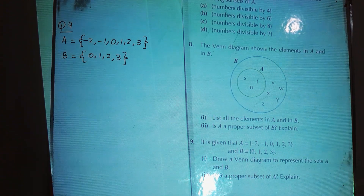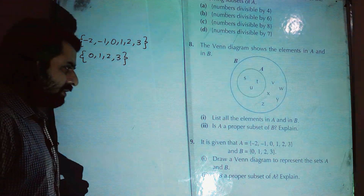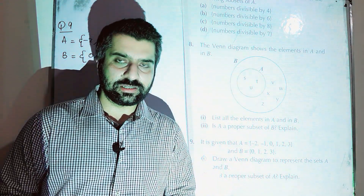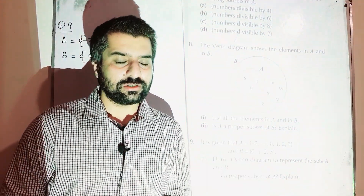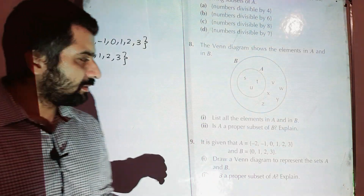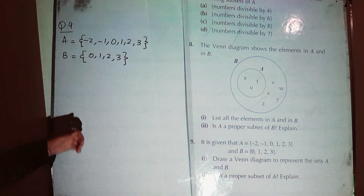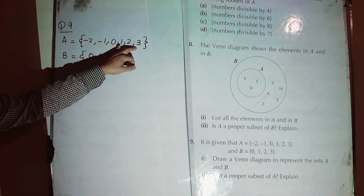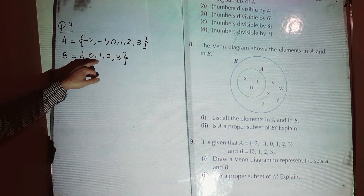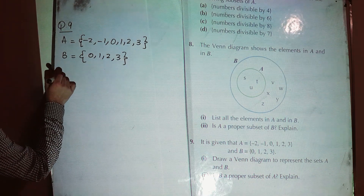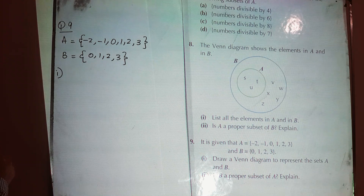In this video we are going to start from question number 9 of D2 7th edition exercise 14B. The topic is sets in one diagram. The question is regarding a Venn diagram: it is given that A is {-2, -1, 0, 1, 2, 3} and B is {0, 1, 2, 3}. Part one says draw a Venn diagram to represent the sets A and B.